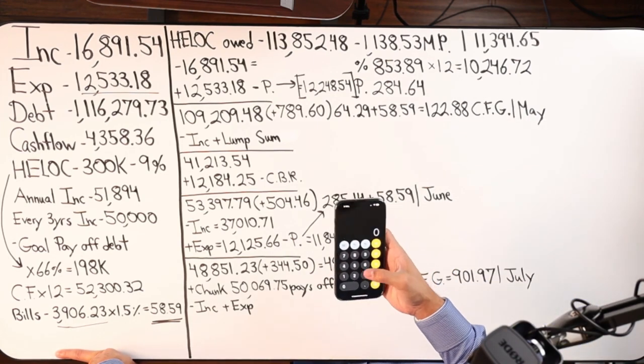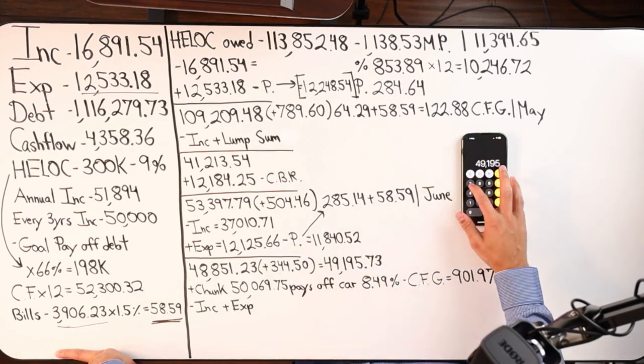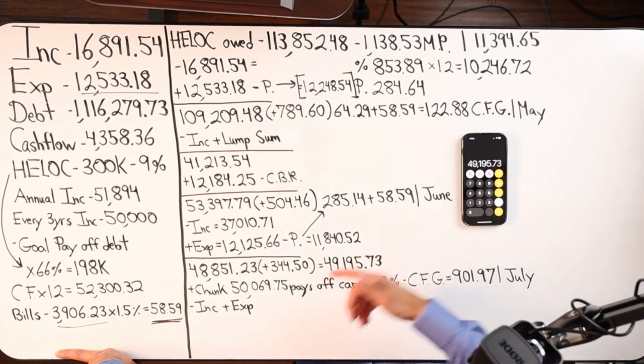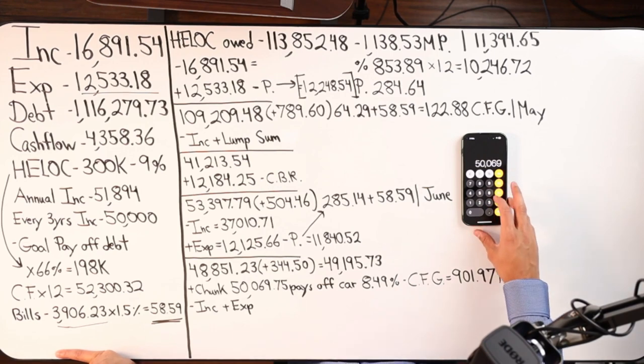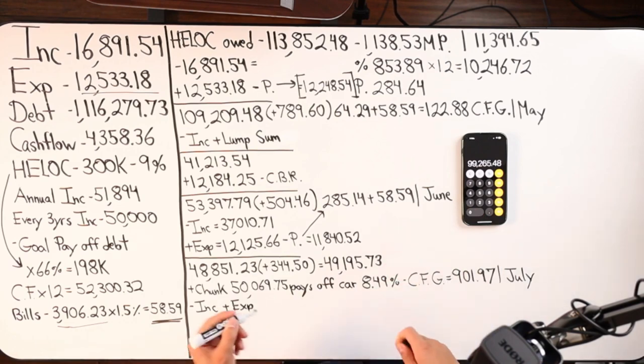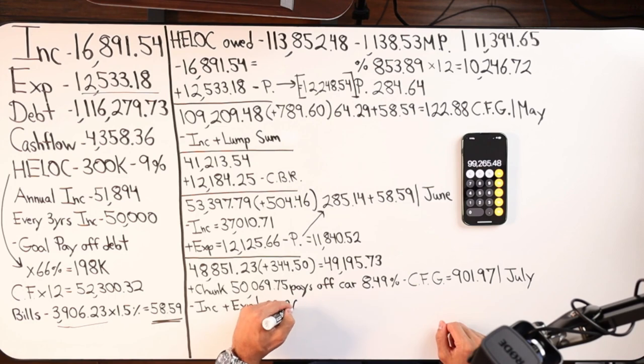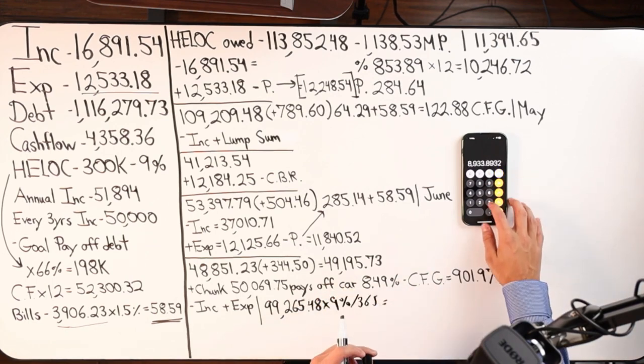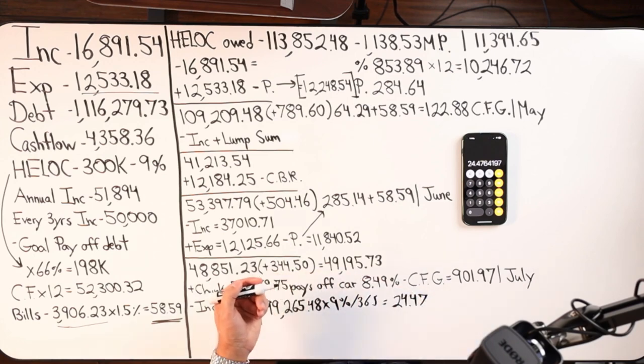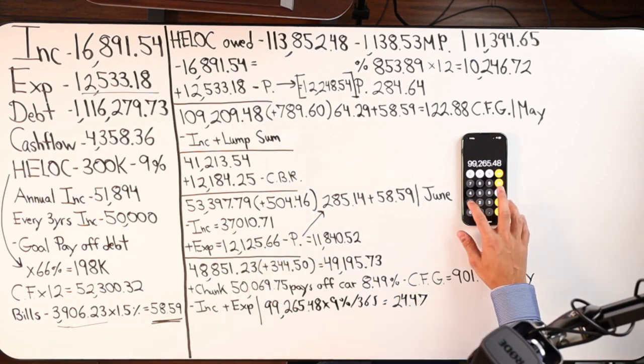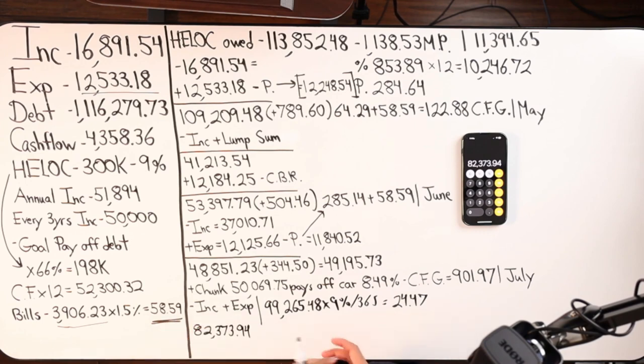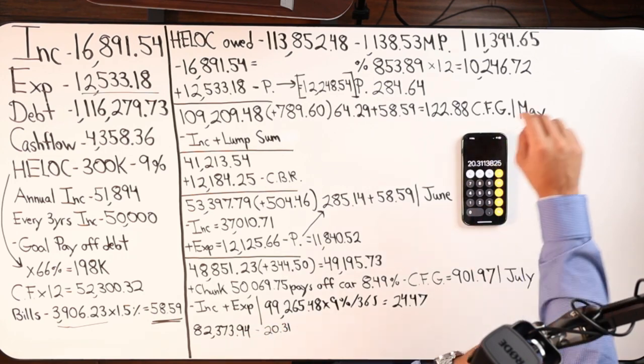$49,195.73 is what I'm saying the balance is at. Add the payoff amount, which is what we're going to chunk, $50,069.75. Now we're at $99,265.48 owed. So we made the chunk. We're at 99. This is the highest balance now that we'll owe. So times it by 9% and then divide by 365. What do you get? Times 9, divide by 365, $24.47 a day is your borrowing costs. Now do velocity banking minus income. So $99,265.48 minus person's income, $16,891.54, where it goes down to $82,373.94. Do it again. Times 9% by 365. Now you're at $20.31 a day. Watch this. Now expenses.